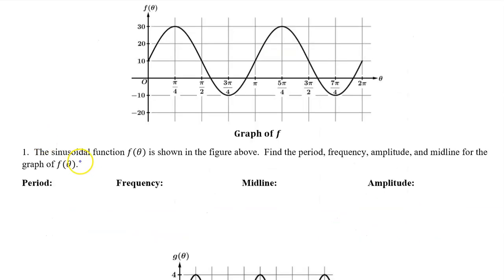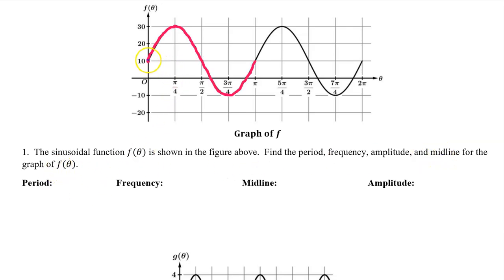Number 1. The sinusoidal function f of theta is shown in the figure above. Find the period, frequency, amplitude, and midline for the graph of f of theta. The period is the horizontal length of one cycle. Here's one cycle highlighted — it goes from 0 to pi, so the period is pi.